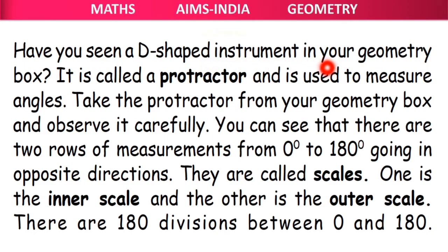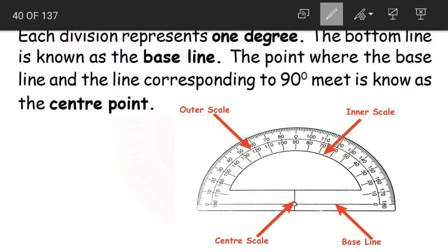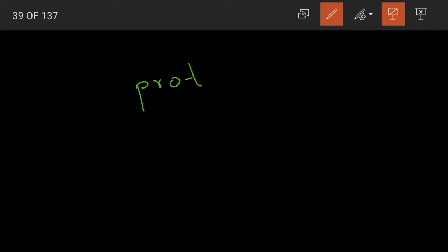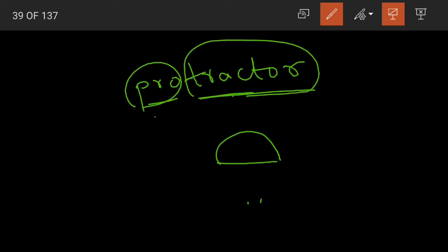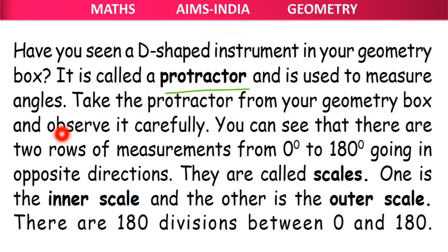Now, have you seen a D-shaped instrument in your geometry box? It is called a protractor and is used to measure angles. This is a protractor — isn't it D-shaped? You might always be looking at this and wondering what it is used for, what kind of scale this is. So this is called a protractor — P-R-O-T-R-A-C-T-O-R. It is this D-shaped instrument found in your geometry box, and it is used to measure our angles.